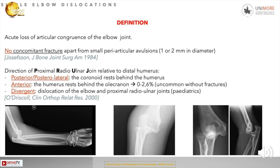The direction of dislocation above the distal humerus can be posterior, when the coronoid rests behind the humerus; anterior, when the humerus rests behind the olecranon; and divergent, when there is dislocation of the elbow and proximal radioulnar joint.